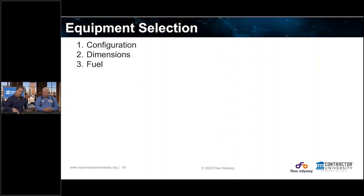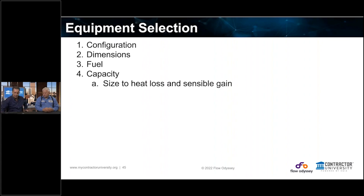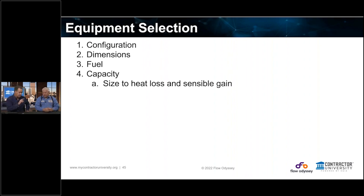The fuel — what fuel type do you have? Is it oil, gas, propane, or electric? The capacity — we know what the load is, so what is the capacity? On the heating side, we size to the heat loss. The calculation gives you both a heat loss and a heat gain. On the heat loss side, we pick equipment that gives us the output based on the load. If it's an 80% furnace, you have to upsize the furnace a little bit.